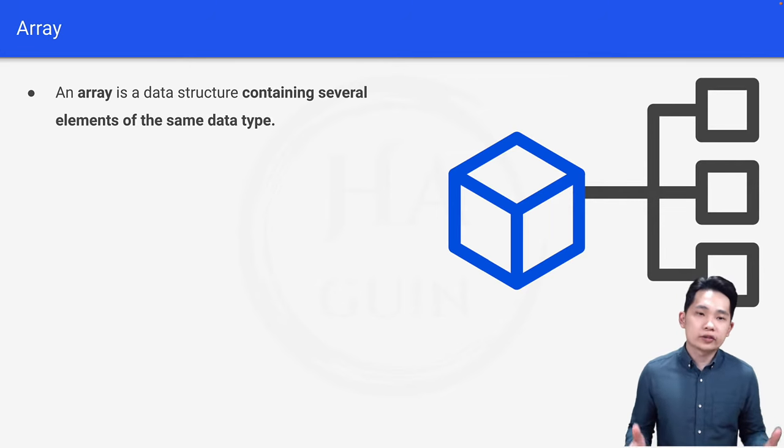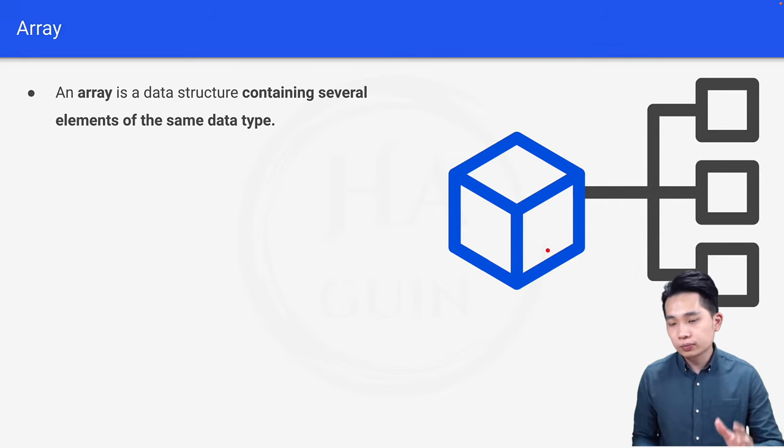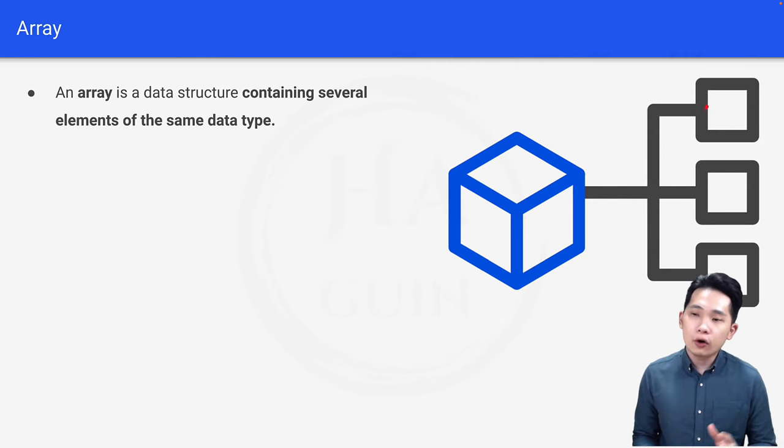So first, what is an array? An array is a data structure containing several elements of the same data type. If you look at the blue box on the right here, just imagine that this blue box is an array and all these grey boxes here are the elements inside this array.